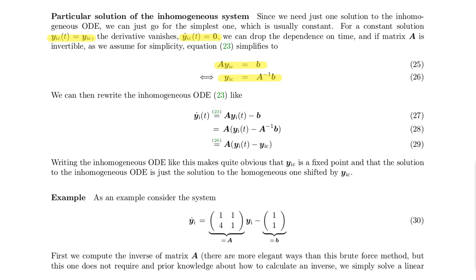Once we have this solution yic, and still assuming A is invertible, we can rearrange our original differential equation by multiplying b by A times A-inverse, then writing A as a common factor in front of yi minus A-inverse b. Since A-inverse b is yic, we can write this as A times (yi(t) minus yic). This shows yic is a valid constant solution: if we replace yi by yic, the right side becomes zero and the derivative is zero.